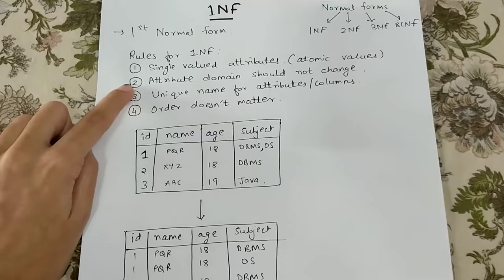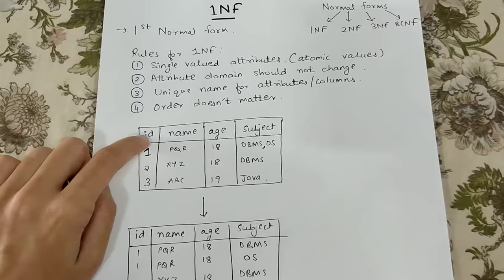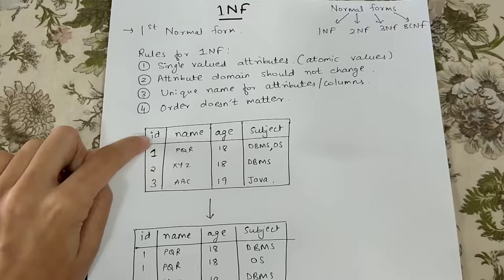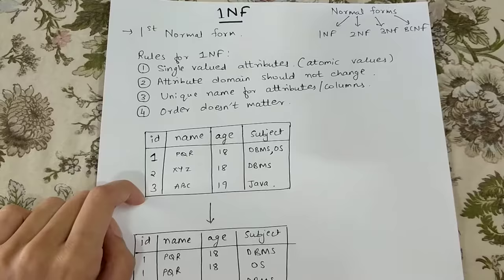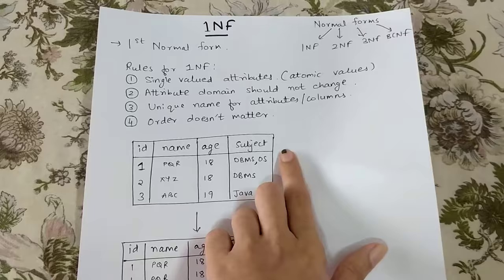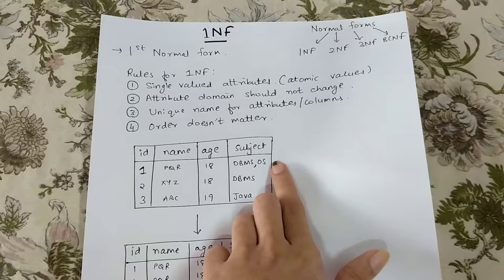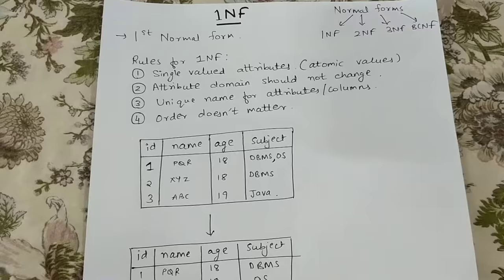The second rule is that attribute domain should not change. The data type of the attributes should not change. For example, if the data type for ID is integer, then values like ABC cannot be entered. Similarly, for a date-of-birth attribute, if you try to insert alphabets or an invalid value, it will not be accepted. That is what rule number two says.